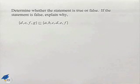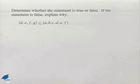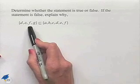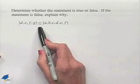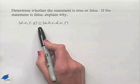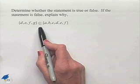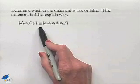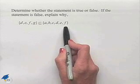Here's another problem dealing with set notation. Determine whether the statement is true or false. If the statement is false, explain why. We're given the set DEFG. We're being asked to figure out whether the statement is true when this symbol, which stands for 'is a subset of,' is used, saying that it's a subset of the set ABCDEF.